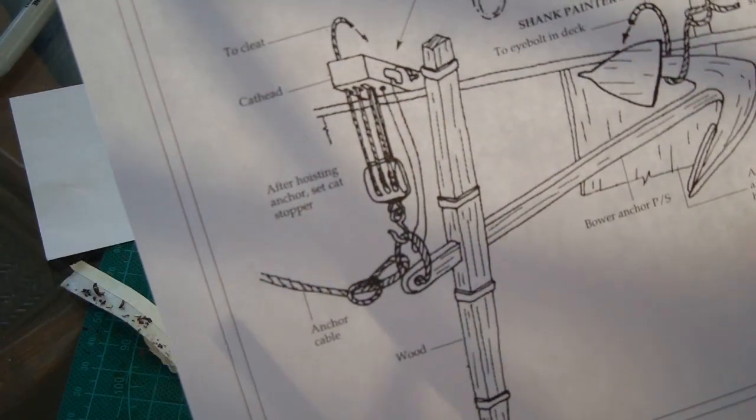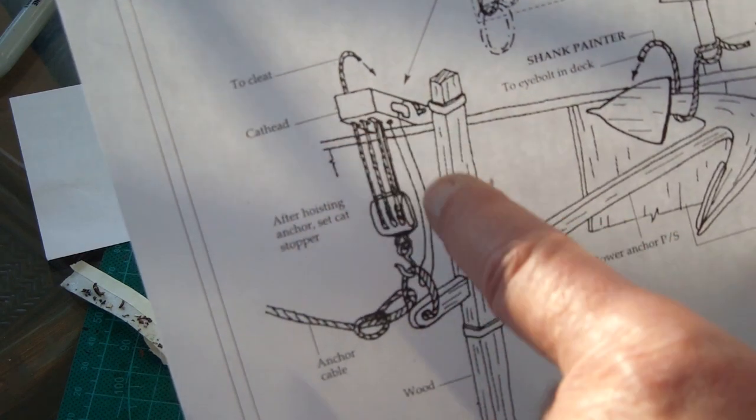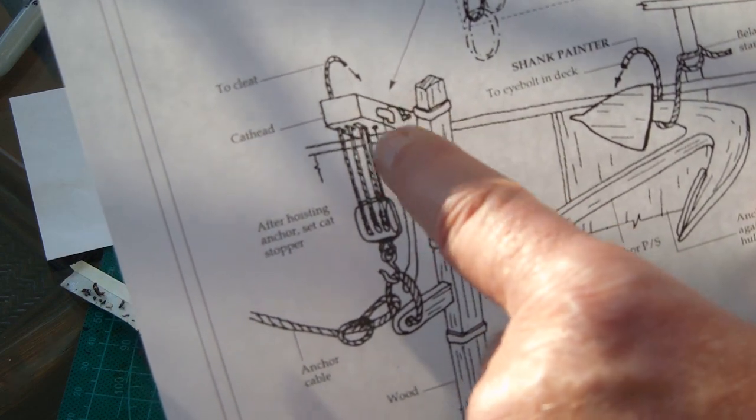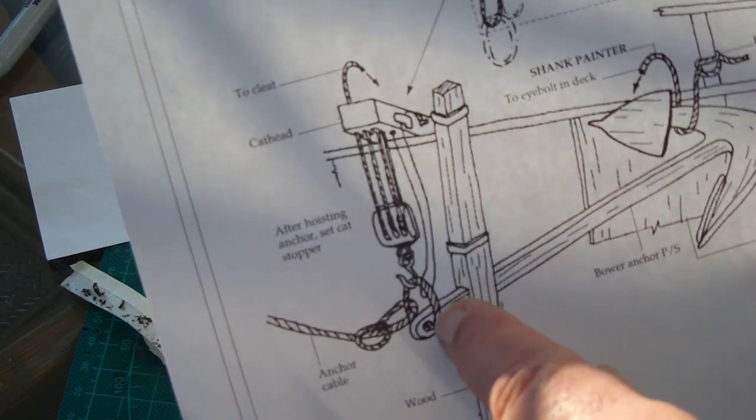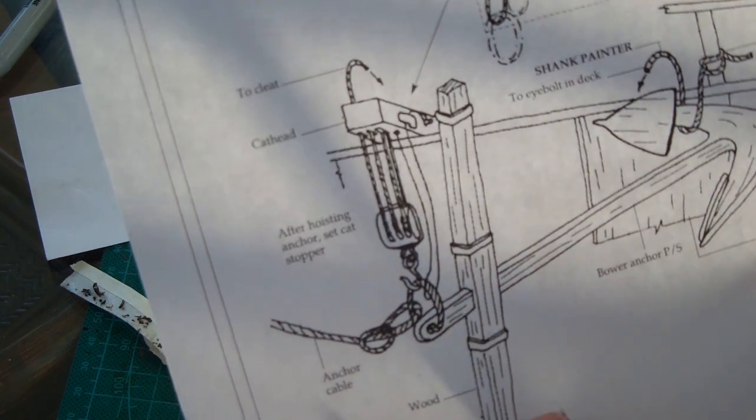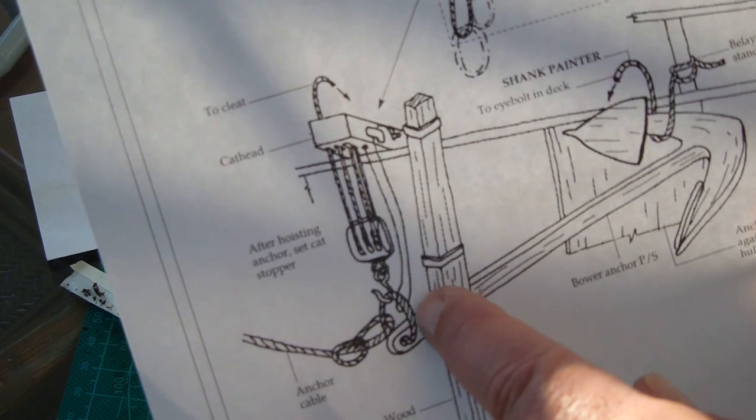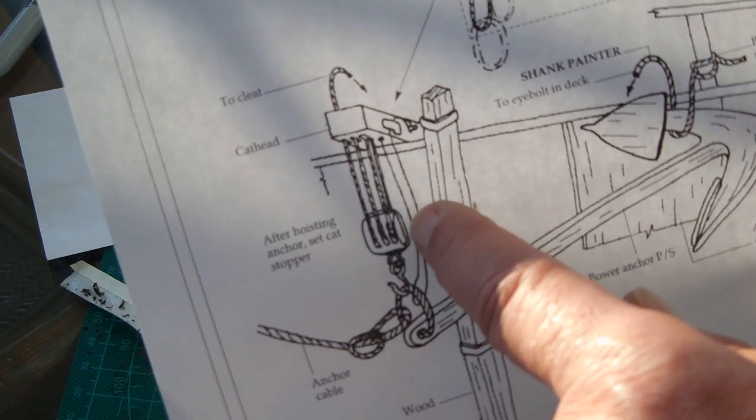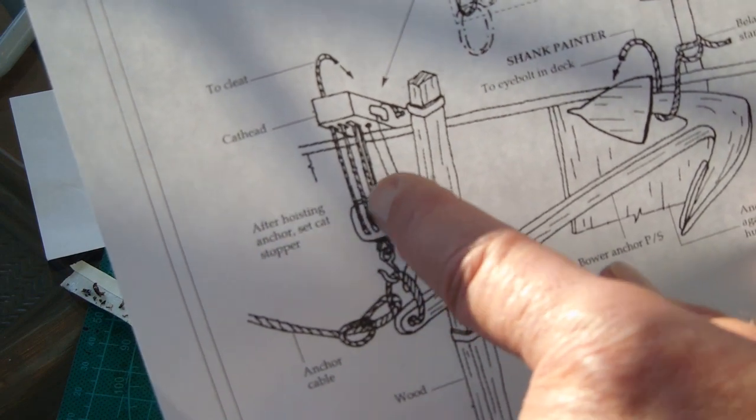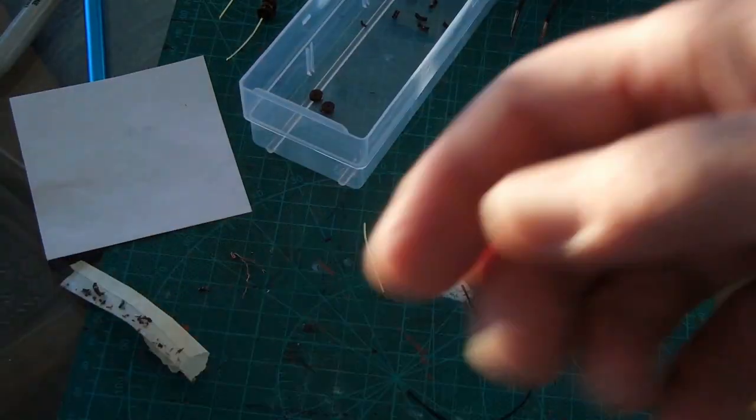After searching and searching, I finally found what this part is. On that part that hangs out over the ship, there's a pulley that kind of supports or lifts the anchor away from the ship. So that's what this whole contraption is for. This little piece right here took five very tiny pieces to make. Let me show you what I did. I improvised some.